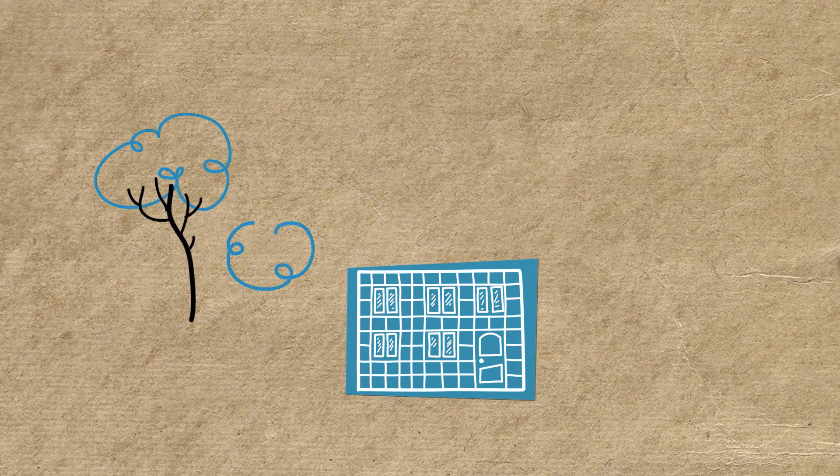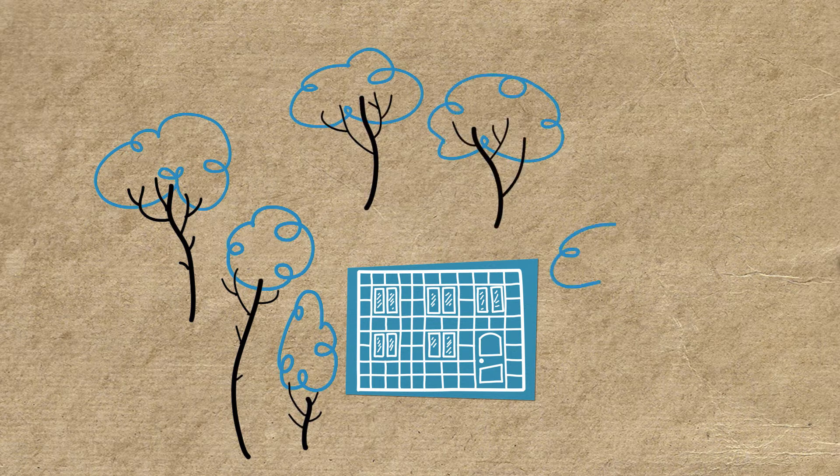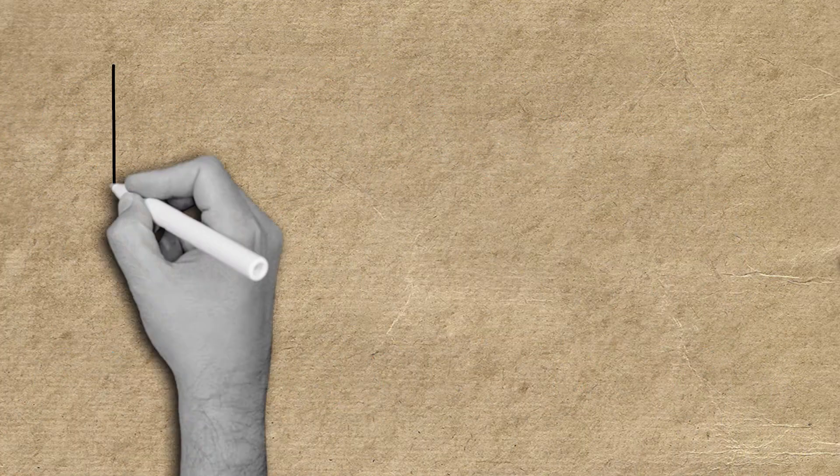Can you imagine your facade as a lung, able to purify the air? 1,000 square meters of H-C tiles have the same capacity to purify the air as a forested area the size of a football pitch.